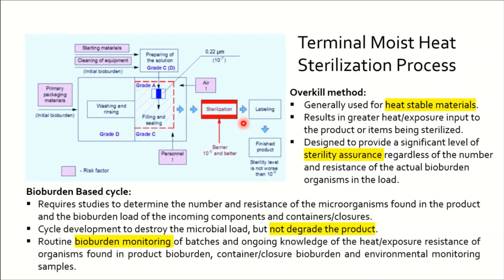This process is majorly divided into two categories: one is the overkill method and the second is the bioburden-based cycle. The overkill method is generally used for heat-stable materials. As a result, a greater heat exposure is input into the product or item being sterilized, designed to provide a significant level of sterility assurance regardless of the number and resistance of the actual bioburden organisms in the load. We apply adequate heat as a combination of time and temperature, or F0 value, to achieve overkill.